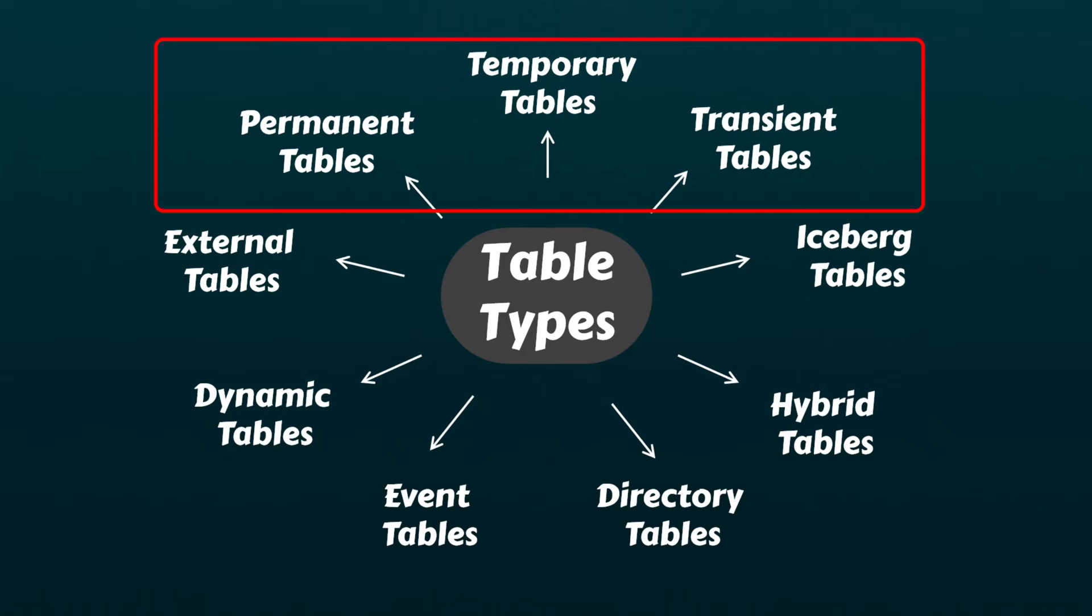Snowflake offers three primary table types to address common data requirements: permanent tables, temporary tables, and transient tables.